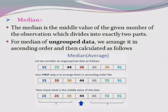The number of observations is 7. From the left side we take out three values — 15, 26, and 38 — and from the right side we take out three values — 66, 72, and 91. The middlemost value is 44. So the median of the given data is 44.